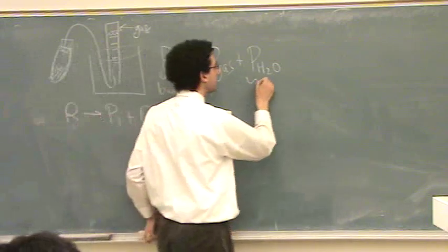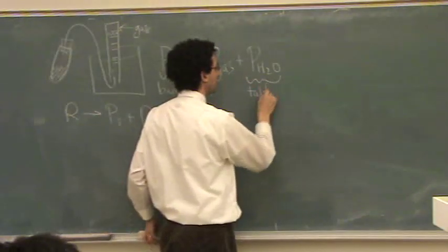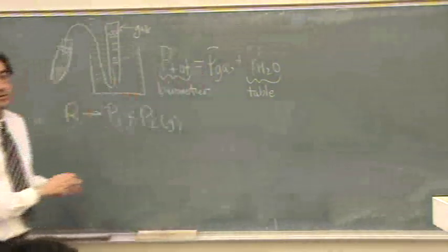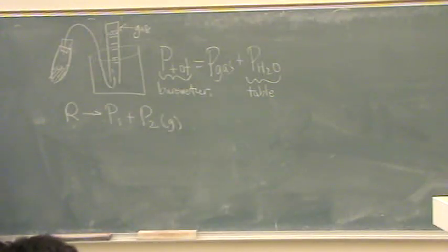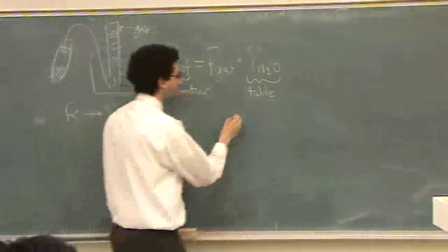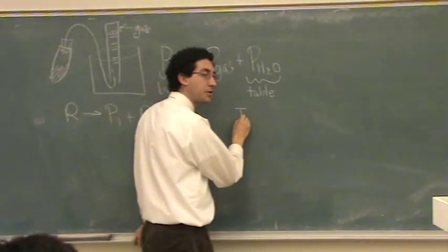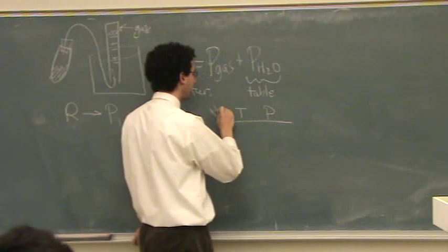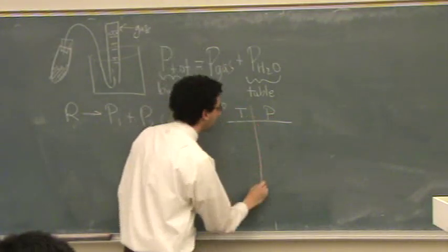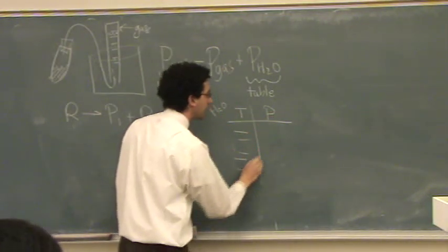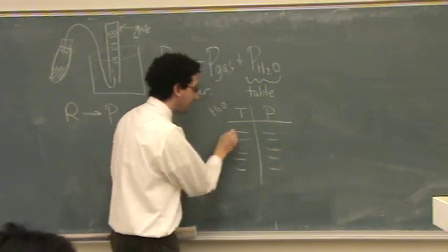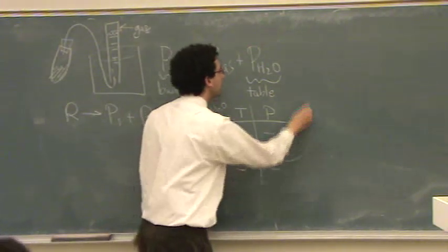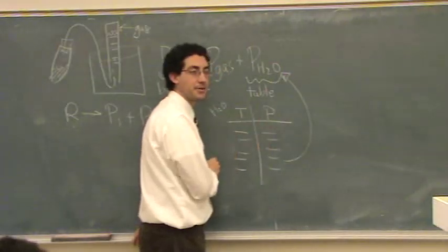This number here, you look up in the table, which we'll give you on the exam. So, what it'll have is there'll be a temperature column and a pressure column for water. It'll be specifically for water. And it'll list a bunch of temperatures here and a bunch of pressures. And you find your temperature, whatever the pressure is on that table, you put that in there. That's your partial pressure of water.